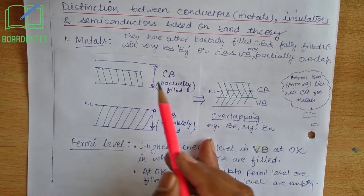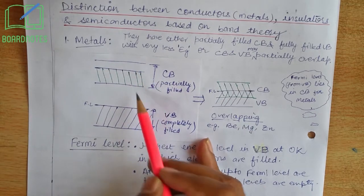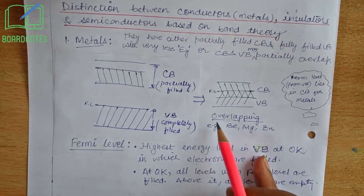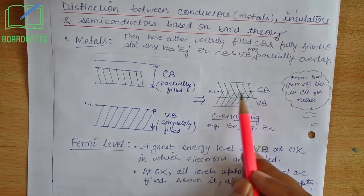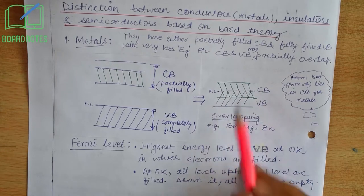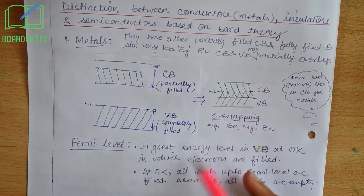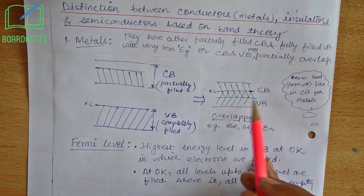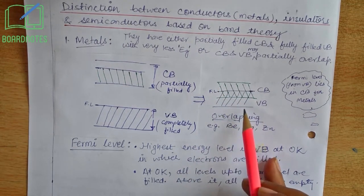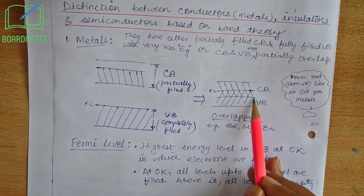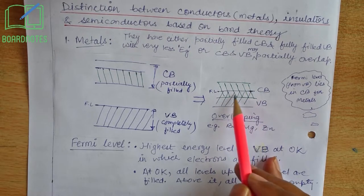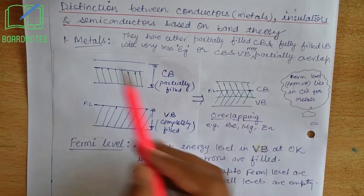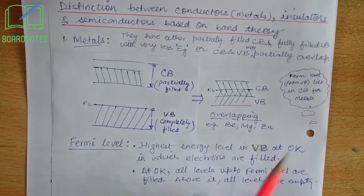Normally, the conduction band overlaps with the valence band such that the Fermi level, which lies in the valence band, lies inside the conduction band. Due to this overlapping, the electrons of the valence band are available in the conduction band and are free to move. Therefore, metals are good conductors of electricity.